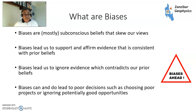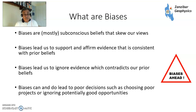So biases — what are they? They're mostly subconscious beliefs that tend to skew our views, either positively or negatively. Biases can lead us to support and affirm evidence that's consistent with prior beliefs — something like confirmation bias, which I'll talk about a little bit later — or biases can lead us to ignore evidence which contradicts our prior beliefs.